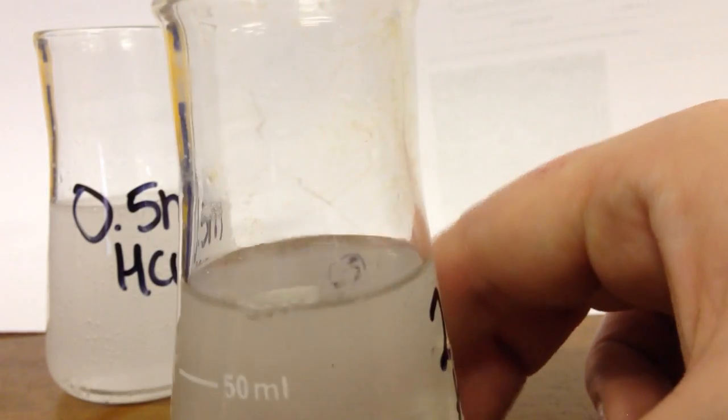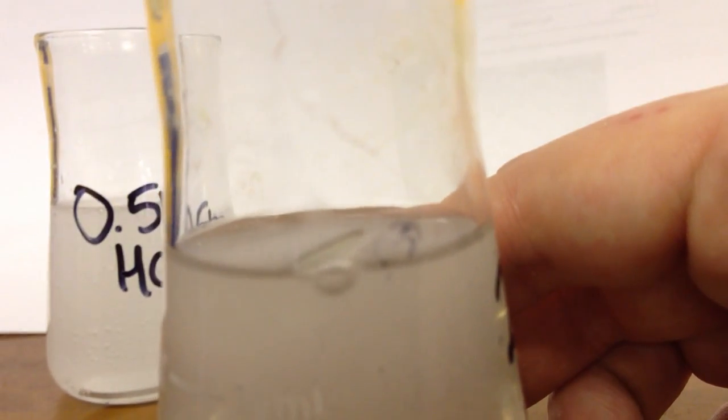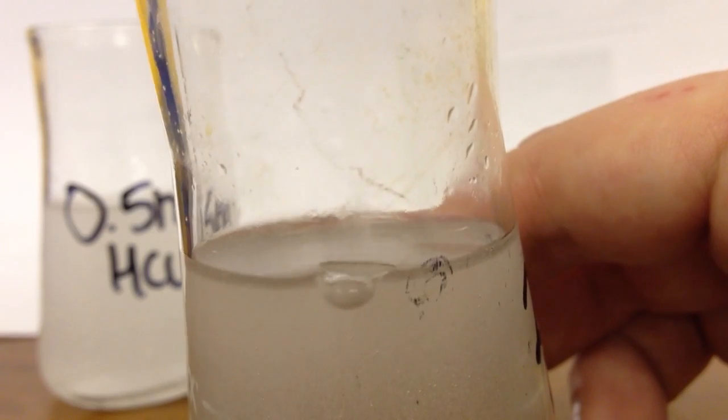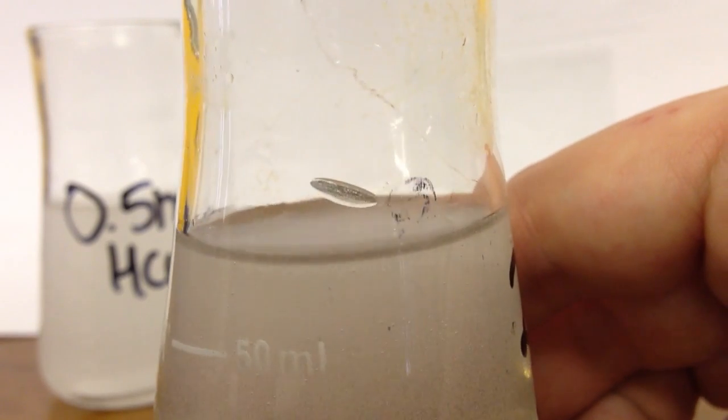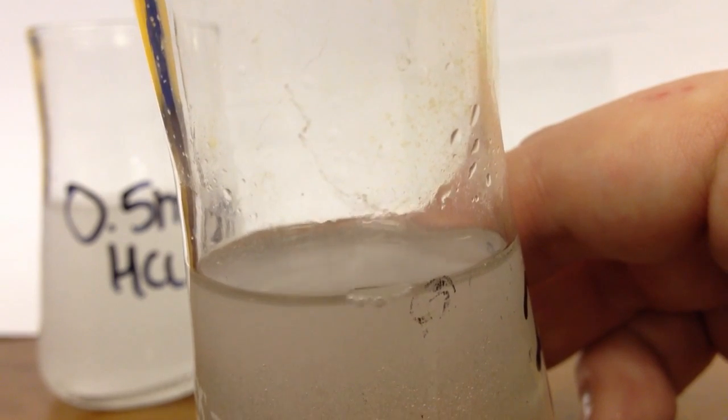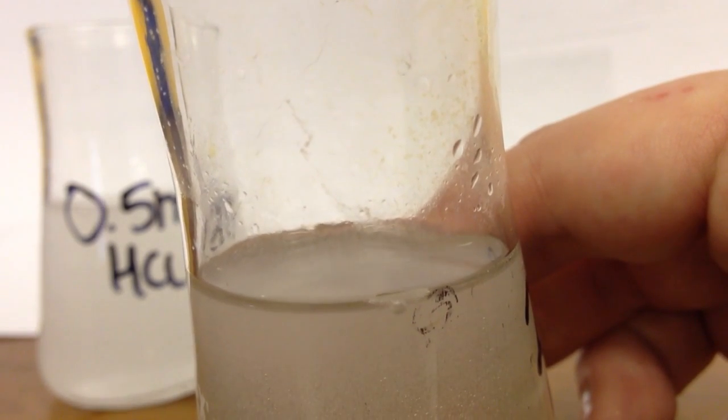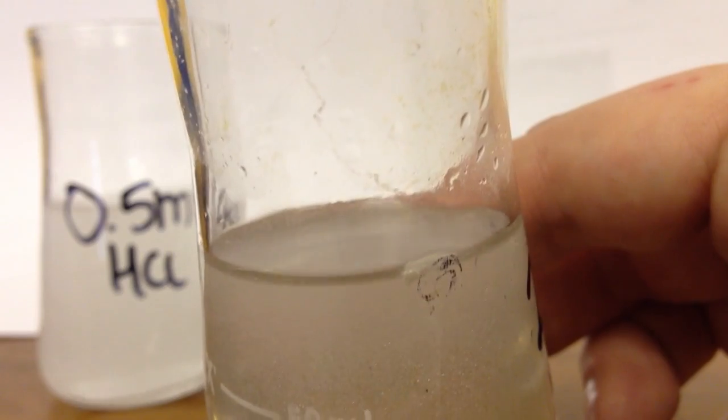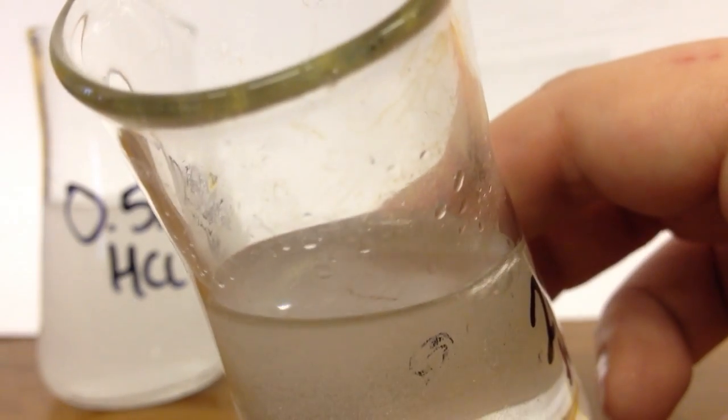And if we just bring it closer, you can see there is a tiny bit of magnesium ribbon left on the side there. If I just tip it so the hydrochloric acid gets in contact with the magnesium ribbon, you should hopefully be able to see more bubbling.